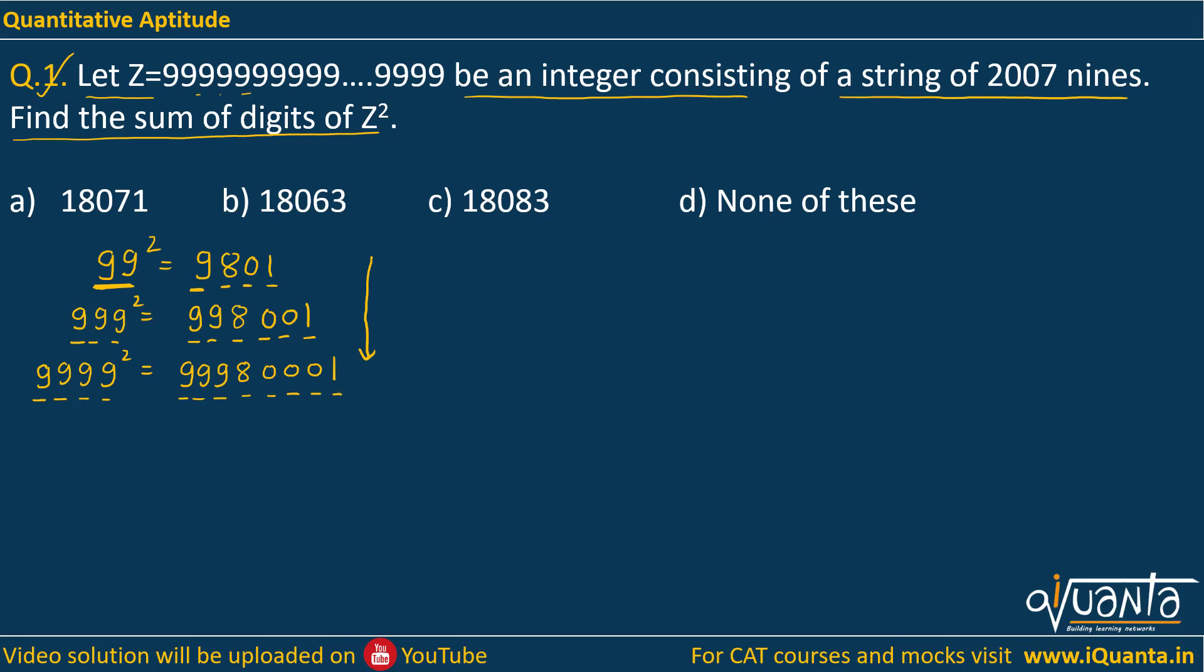So the pattern that we can identify over here is: if the 9 digit is written n times and if we find out its square, we are getting nine (n-1) times repeated. Like when I find out 99², I am getting nine only once. When I am finding out triple nine squared, I am getting nine twice. If I am finding out 9999², then I am getting nine three times.